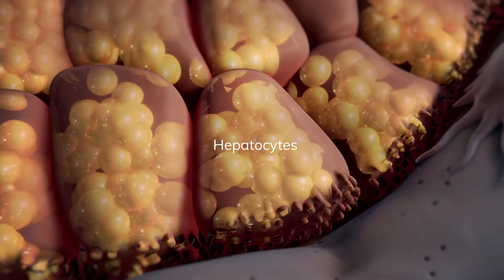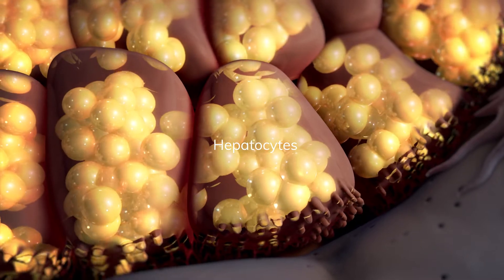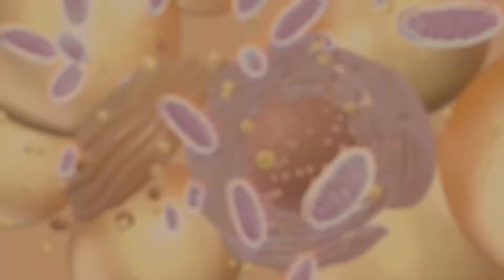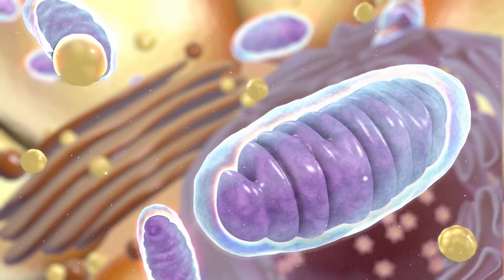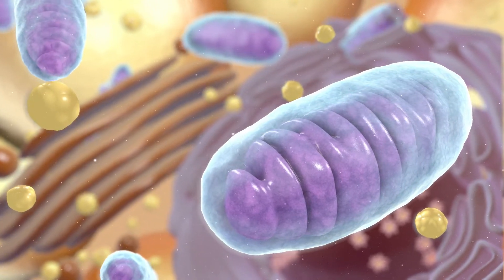In NASH, fat collects in liver cells called hepatocytes. The fat build-up puts stress on mitochondria, the cell's energy producers.